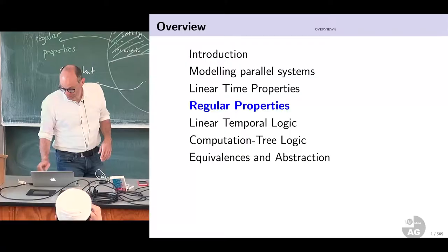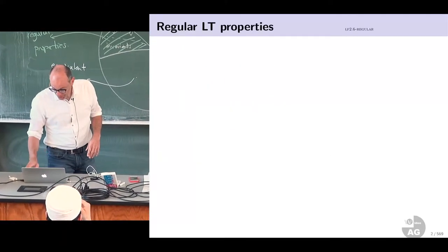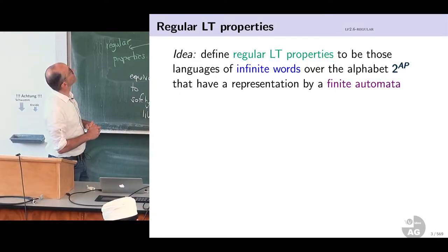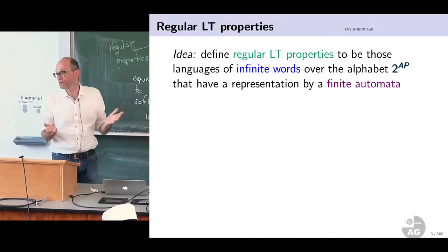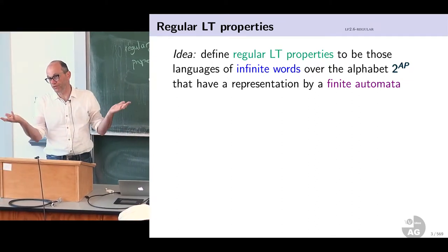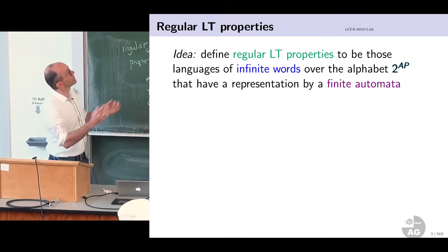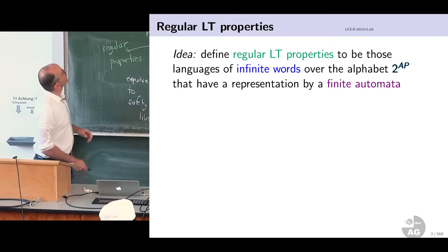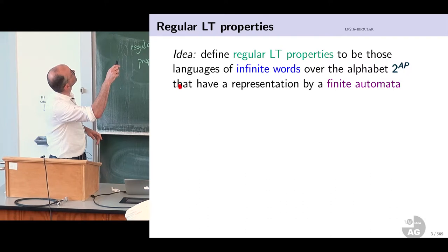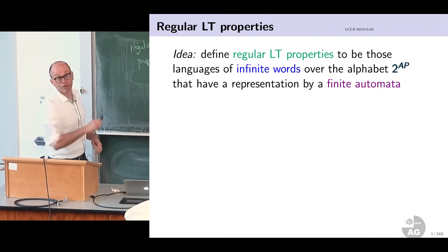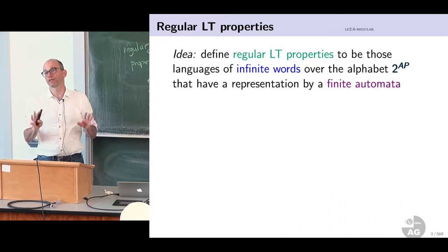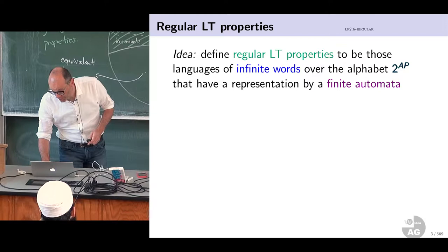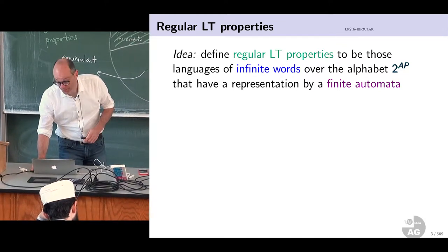Regular properties are a part of safety properties. They include the invariants, they include some of the safety properties but not all. The reason I am doing this is that I can use off-the-shelf automata theory to do the algorithms, giving hopefully an easy introduction to the first model checking algorithm. We will then enlarge this to cover all properties, but that requires a little bit more machinery.